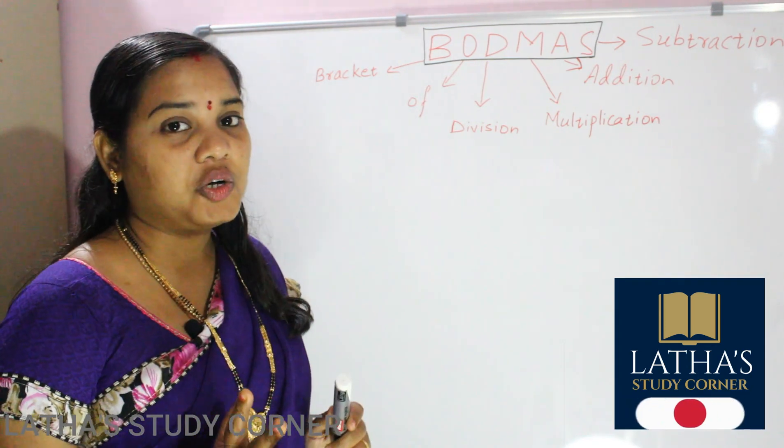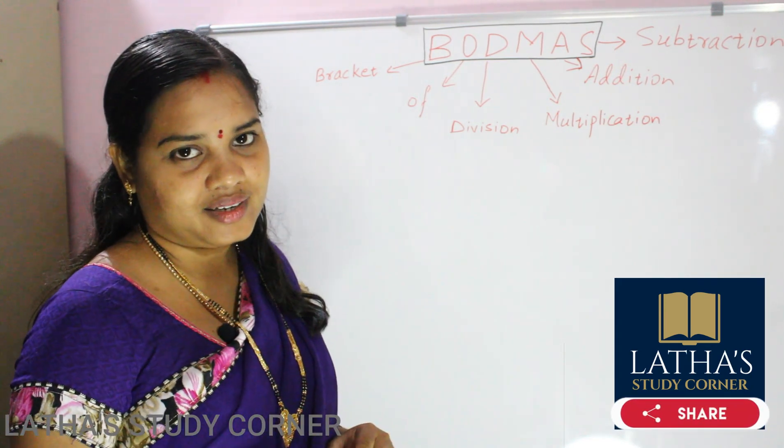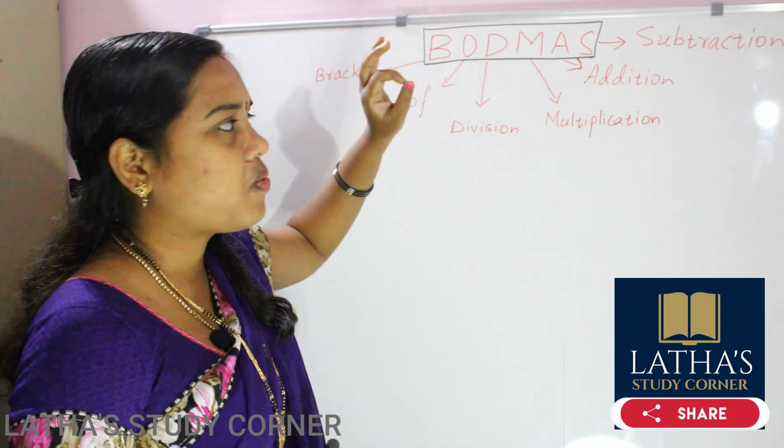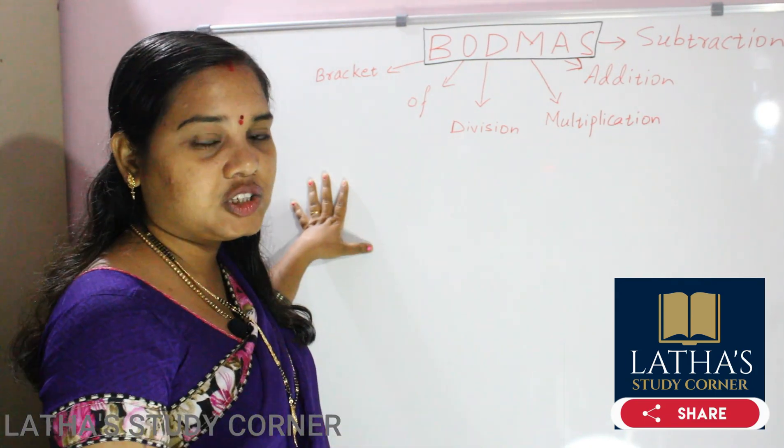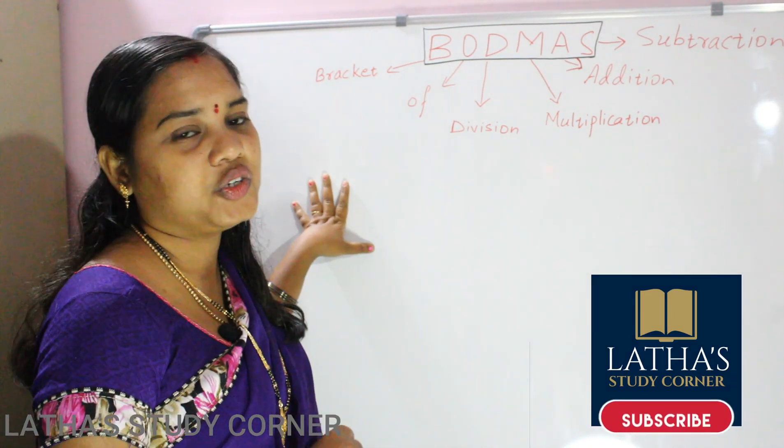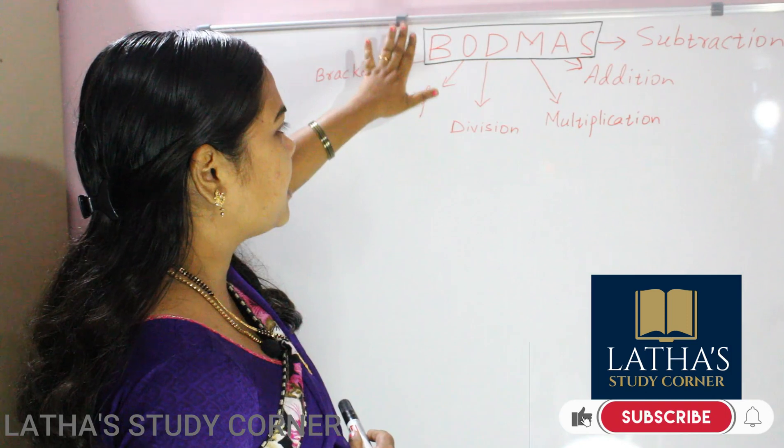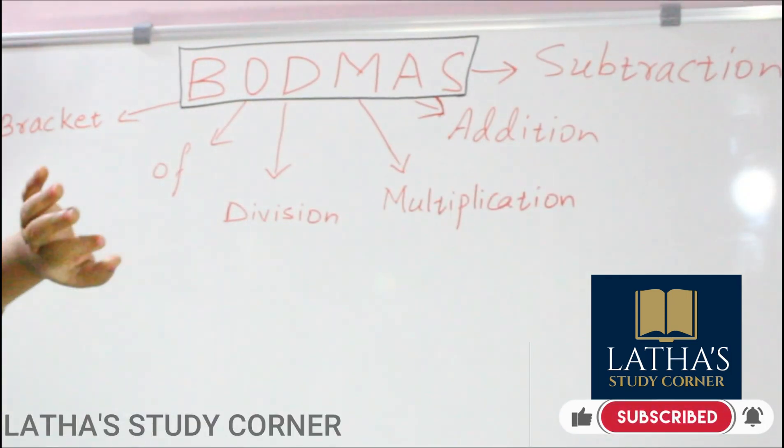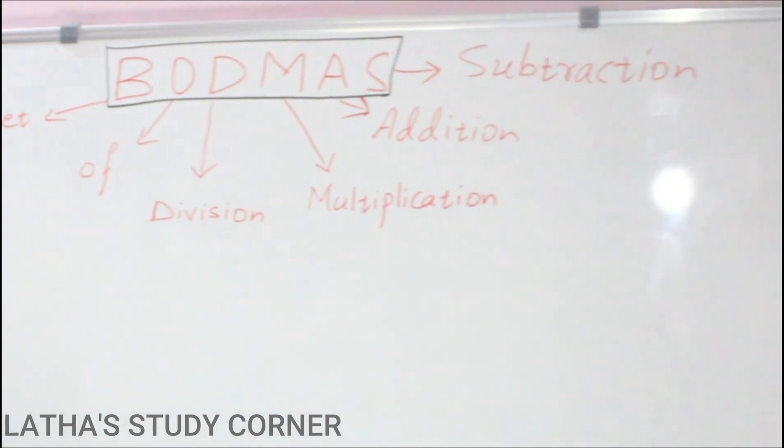If in one question two or more fundamental operations are there, then we must follow BODMAS. So BODMAS is a rule which explains which operation first we have to do. Here you can see BODMAS, all the letters are capital because they are the first letter of these operations.